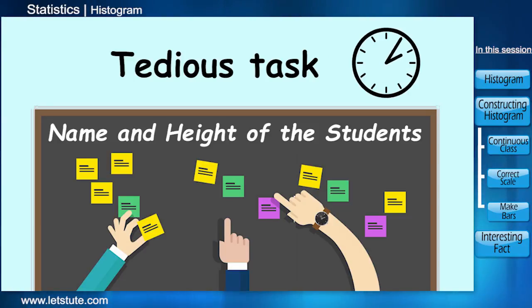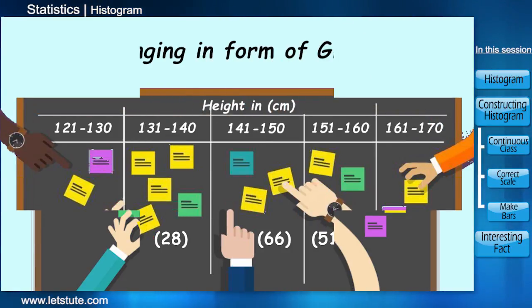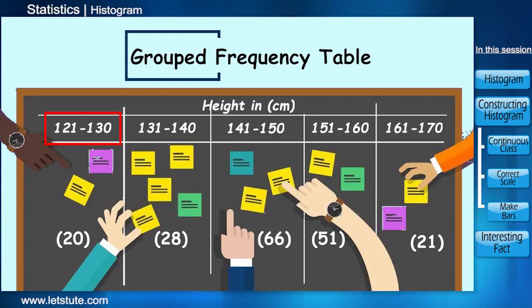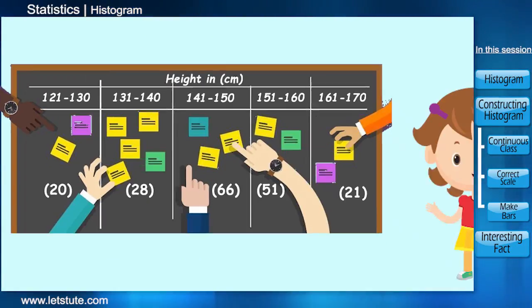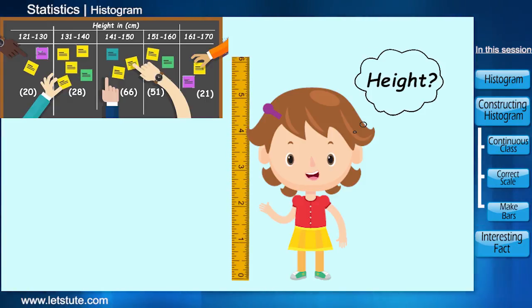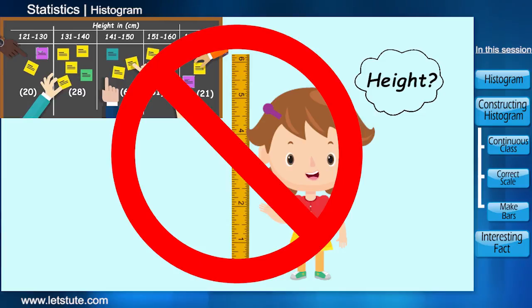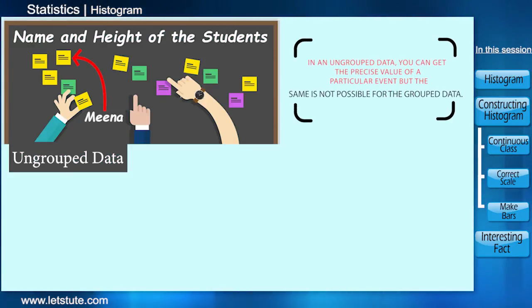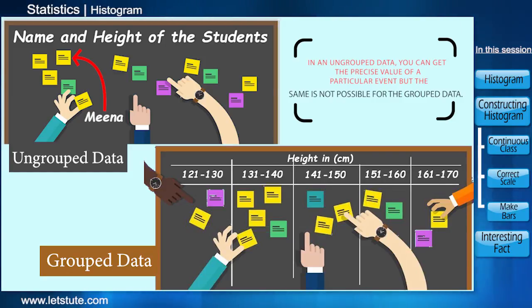So in order to save time we arrange this data in the form of groups, like in the form of a group of 10. Now this is called a grouped frequency table. But here if I ask you what's Nina's height, will you be able to answer it? No, right? In an ungrouped data you can get the precise value of a particular event but the same is not possible for the grouped data.